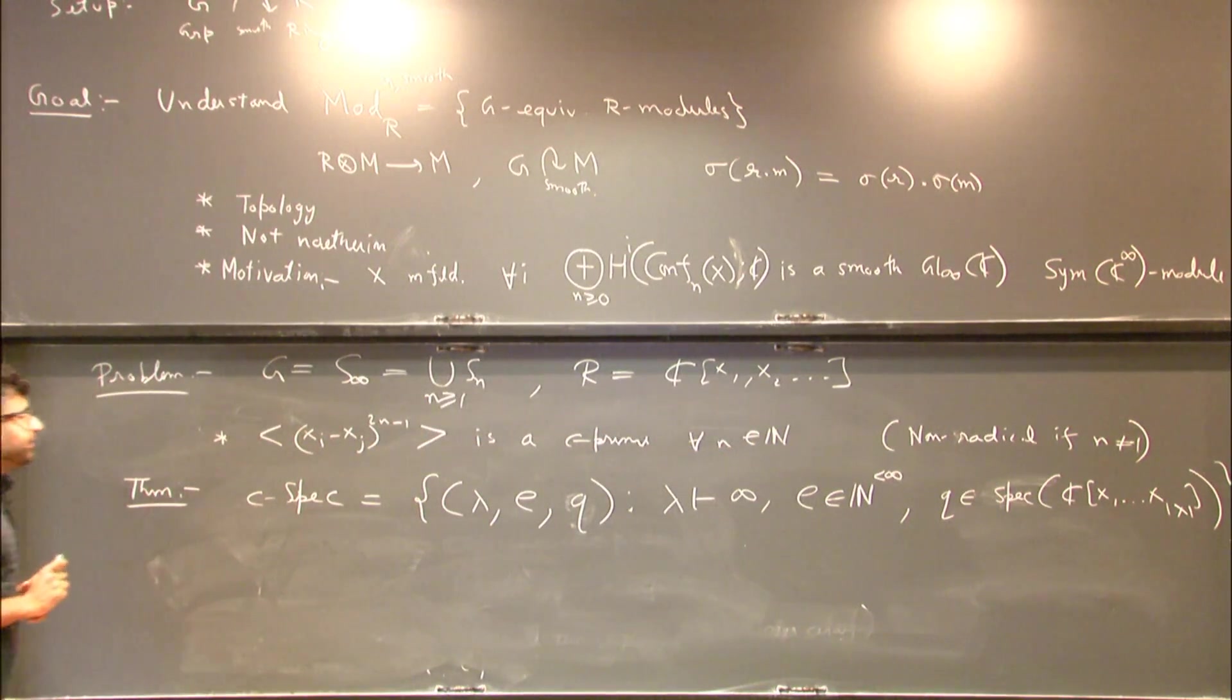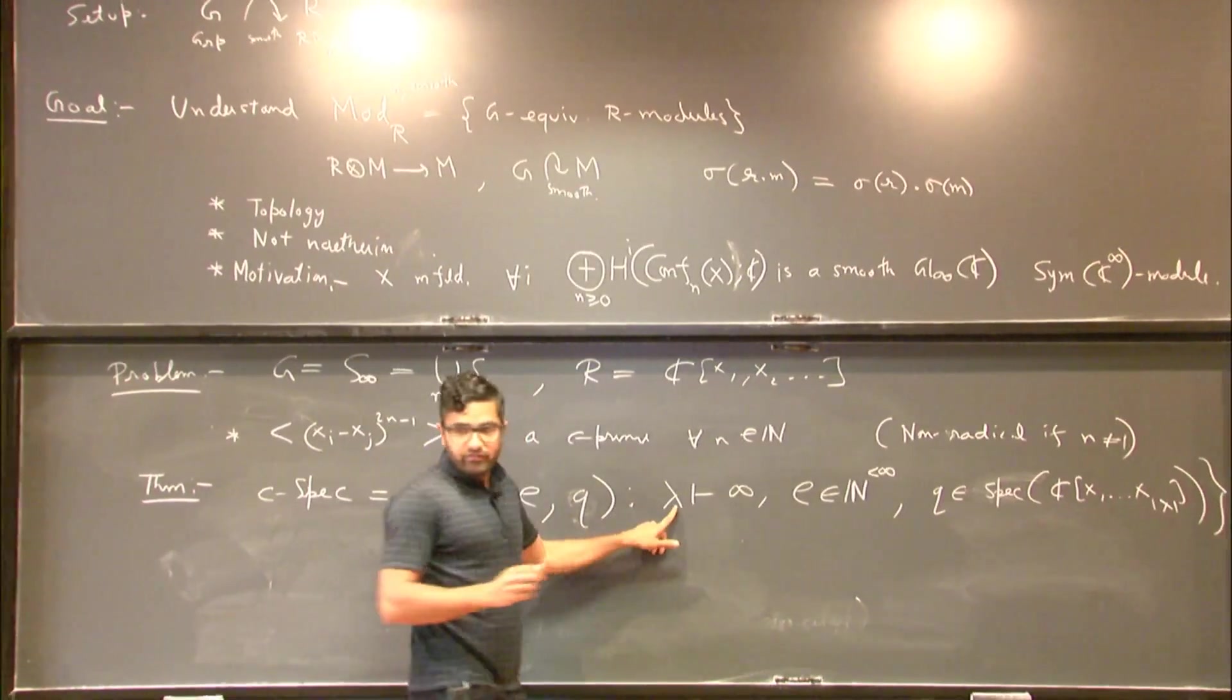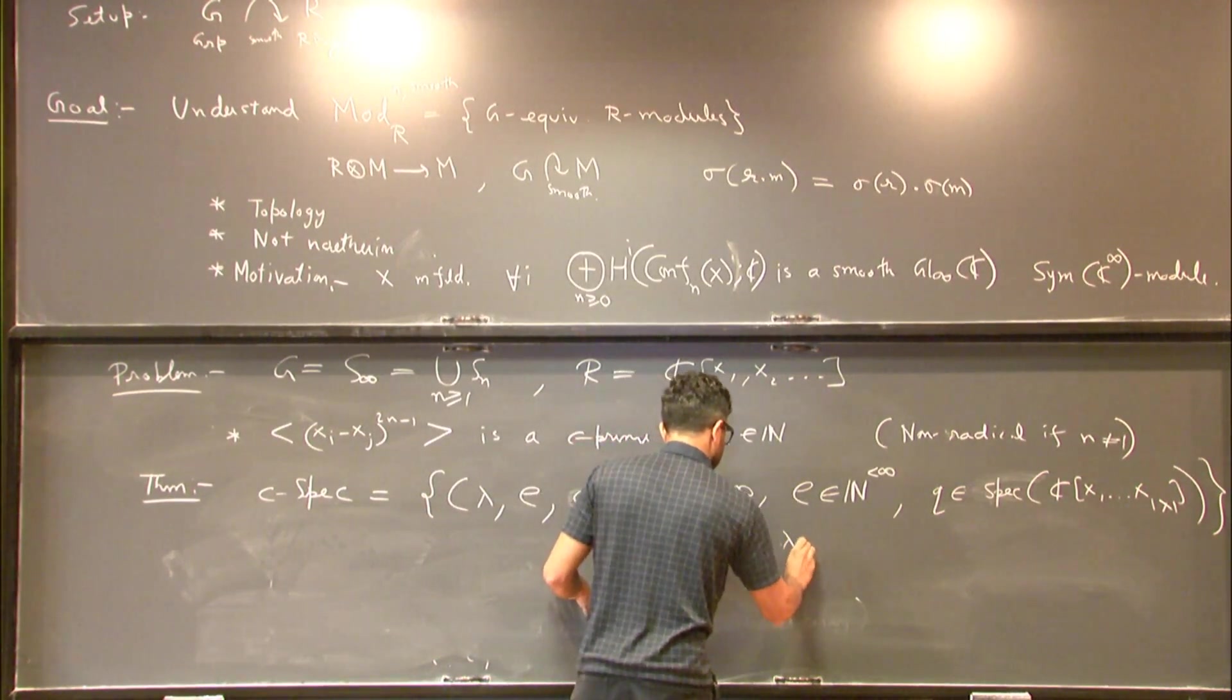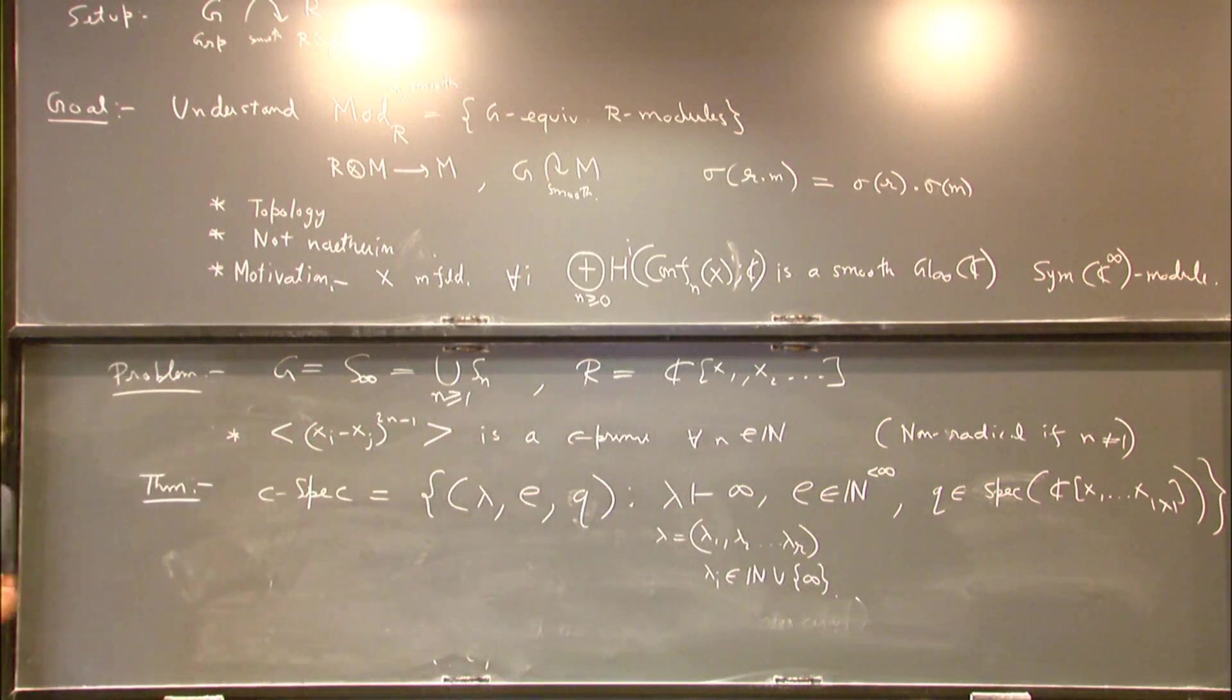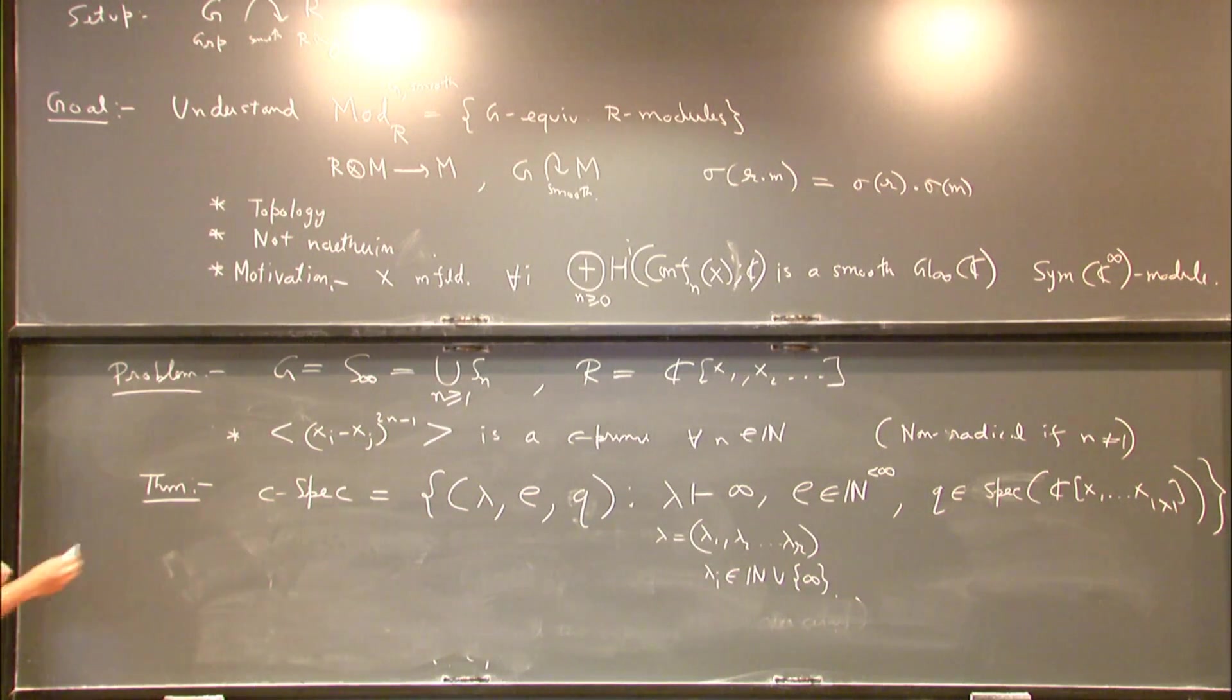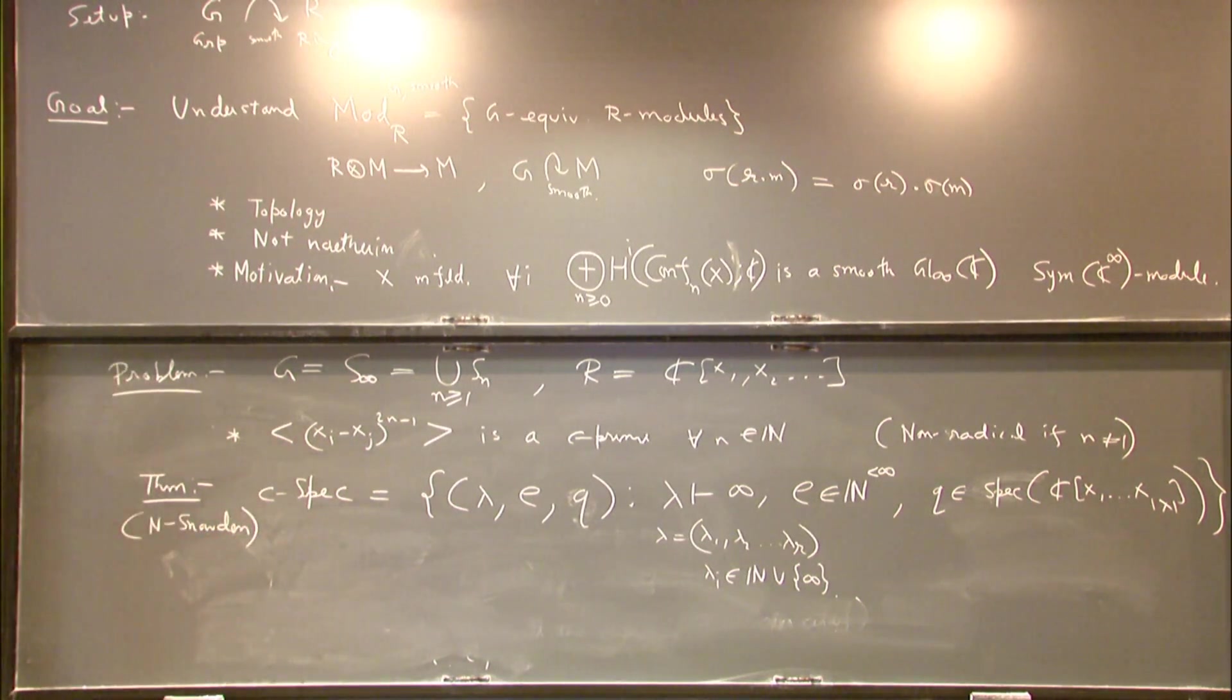And so now we expect to be able to, yeah? What is lambda? Lambda is a partition of infinity in finitely many parts, so lambda equals, and at least one of them is infinite. It's a partition of infinity. Right. Okay. So we expect, so we have this description already. This is, again, joint with Andrew Snowden. And we expect this to be able to understand the category of modules using the description of these C primes. I guess I'll stop here now.